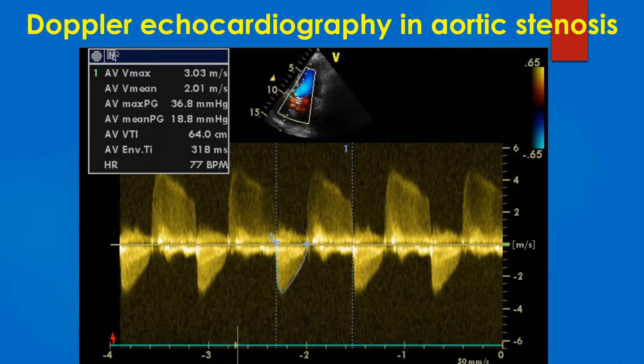The measurements shown here are: AVVmax – Peak Aortic Velocity; AVVmin – Mean Aortic Velocity; AVmax PG – Peak Aortic Gradient; AVmin PG – Mean Aortic Gradient; AVVti – Aortic Velocity Time Integral; AVnti – Aortic Velocity Envelope Time; and HR – Heart Rate.